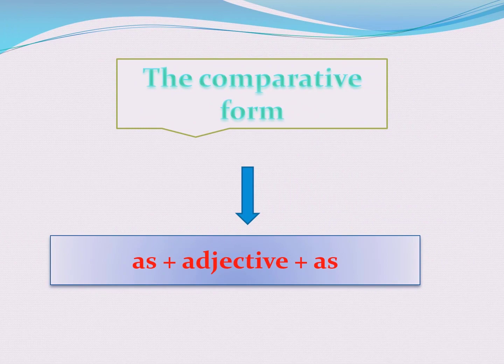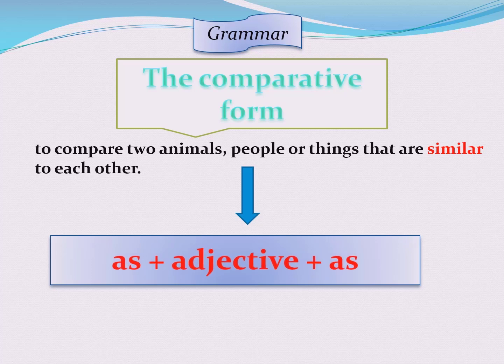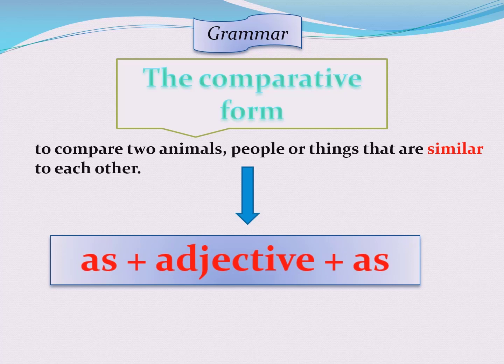Now let's move to our grammar for today. We're still talking about the comparative form. Today we are going to compare two animals, people, or things that are similar to each other. When we're talking about the comparative form, today we focus on how to compare things that are similar. We are going to use as plus adjective plus as.